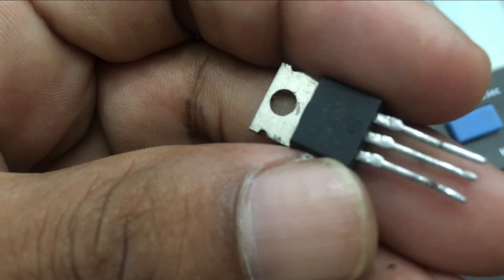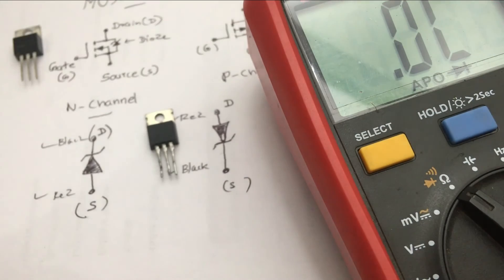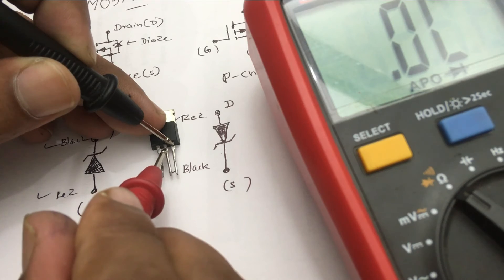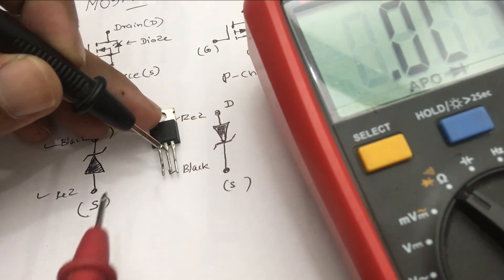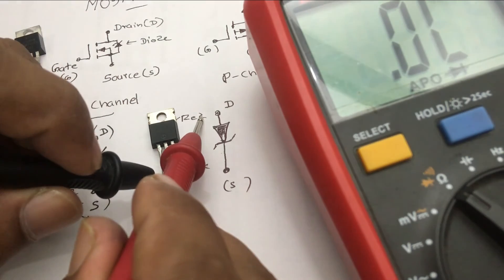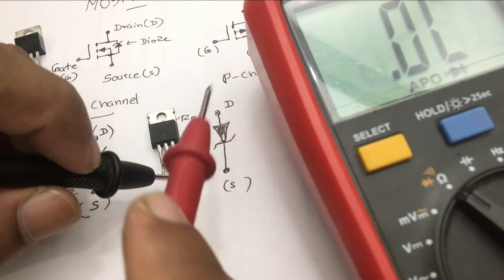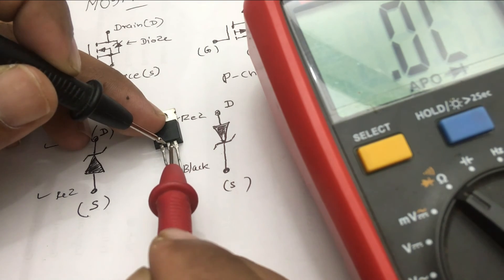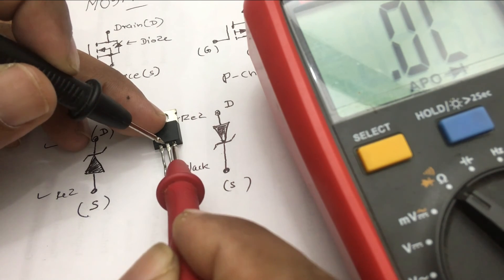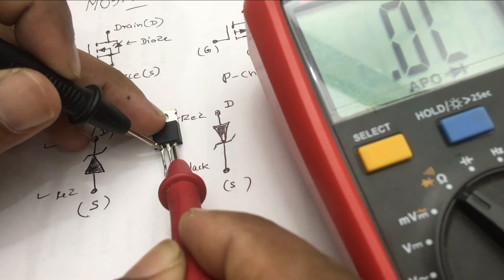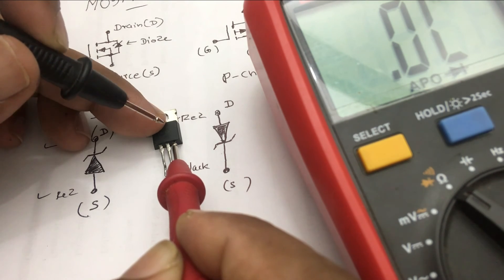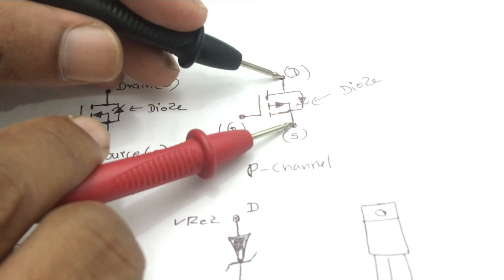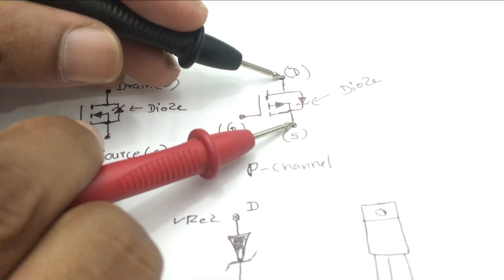Now shall we try to check a P-channel MOSFET as well. This is the F9540N MOSFET. The theory is the same — first check the source and drain pins. I connect black to source and red to drain, and there is a reading. Accordingly I assume this is a P-channel MOSFET. Now I am going to check the gate pin. I connect the red to source and connect the black to gate, expecting to activate the MOSFET. Now keeping the red to source, I connect the black with drain — you can see a reading. This is because the MOSFET has been activated.